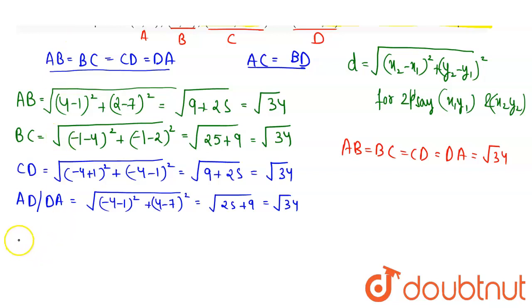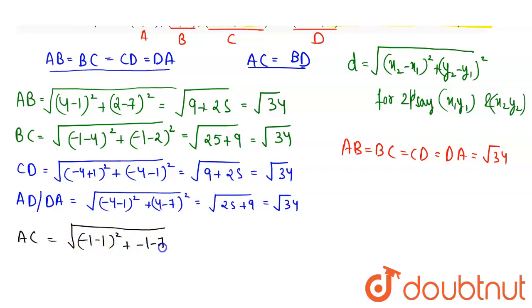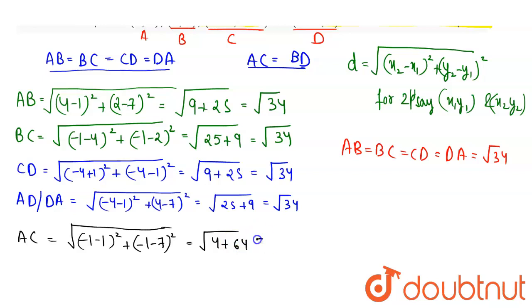Diagonal AC — the distance between point A and C — equals √[(−1 − 1)² + (−1 − 7)²] = √[(−2)² + (−8)²] = √[4 + 64] = √68.